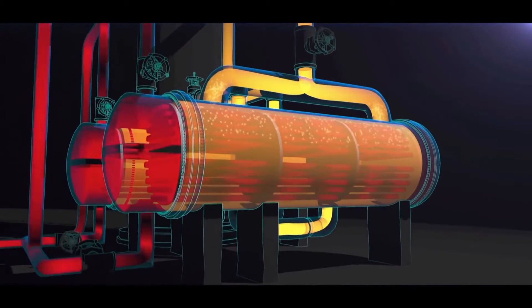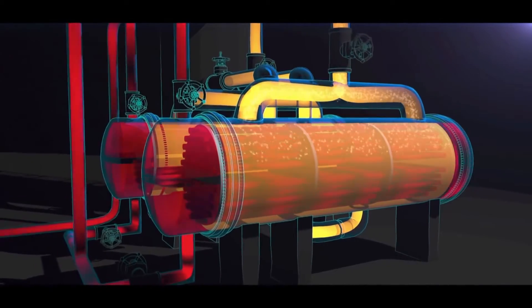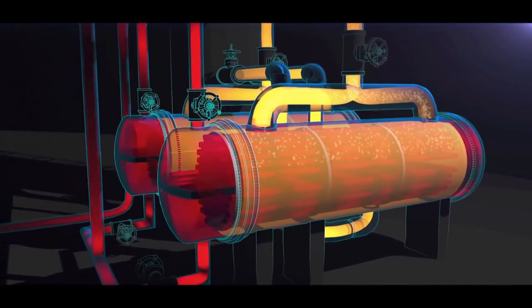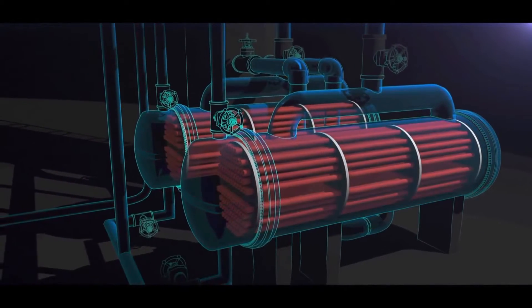Periodically, the reboilers must be shut down to clean the tubes. The original propylene fractionator design had both reboilers running simultaneously. But in that configuration, the fractionator had to be shut down when a reboiler fouled and needed cleaning.